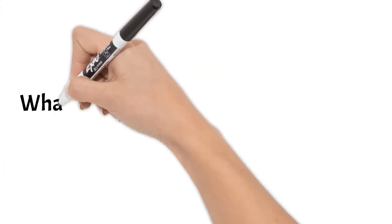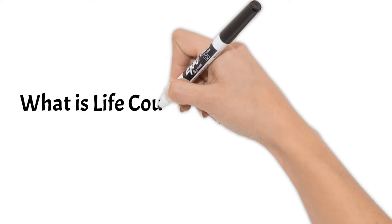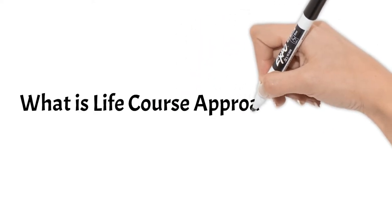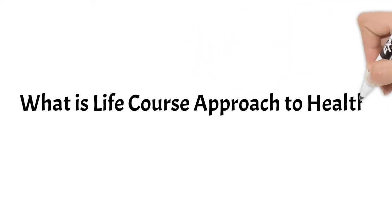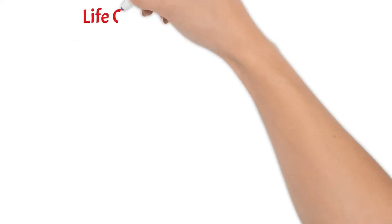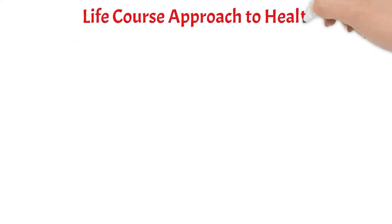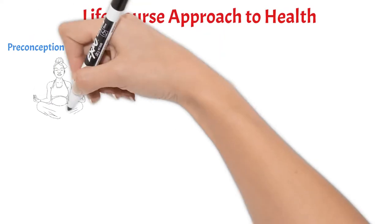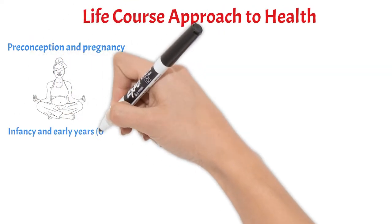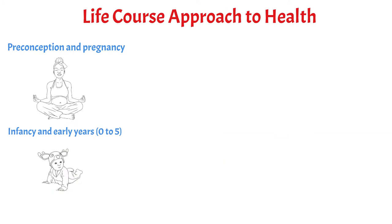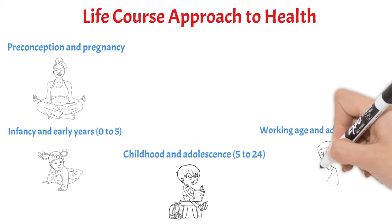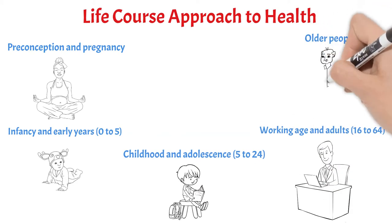Hi and welcome to another episode of Get It Right. In this episode we will see what is life course approach to health. A life course approach emphasizes looking back across an individual's or a cohort's life experiences, or across generations, for clues to current patterns of health and diseases. In simple words, it is the approach from cradle to the grave.